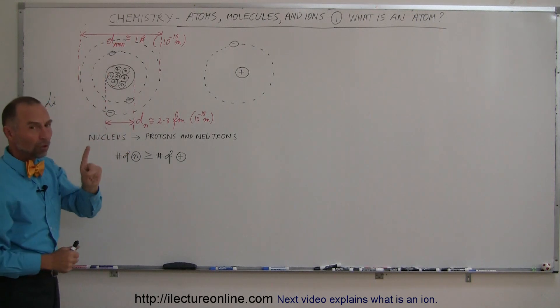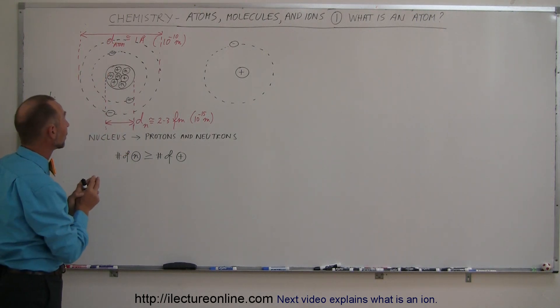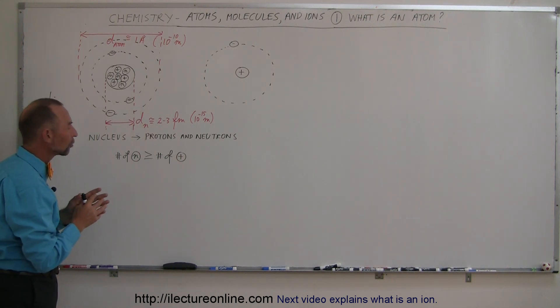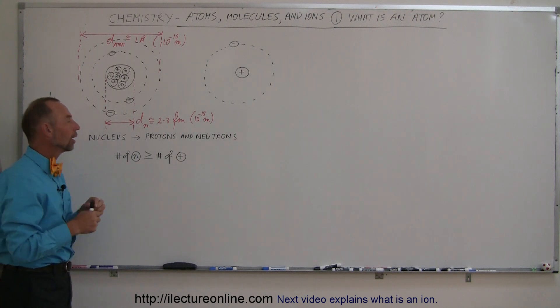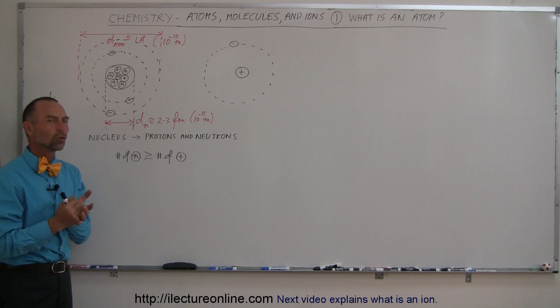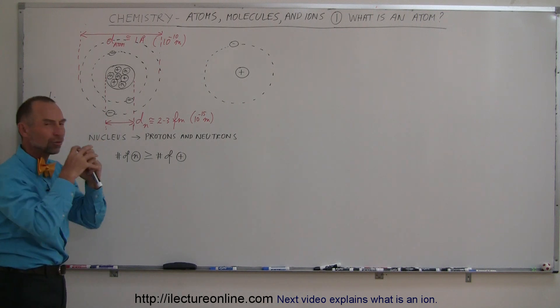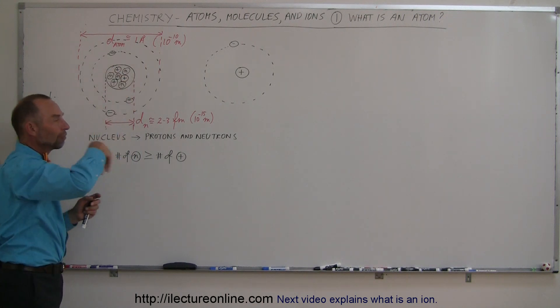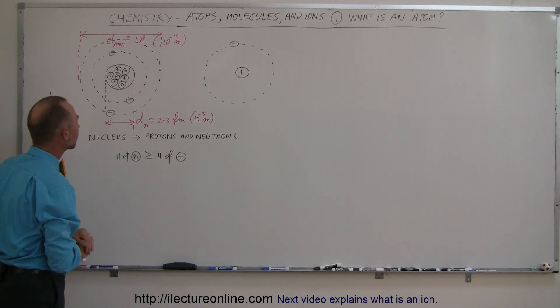It's the number of protons that define the element that it is. The number of neutrons are there to keep the nuclear strong forces and the electrical repulsive forces at bay, keeping the nucleus together. The neutrons are really there to help keep the nucleus intact. Around them we have an equal number of electrons flying around the nucleus at very high speed.